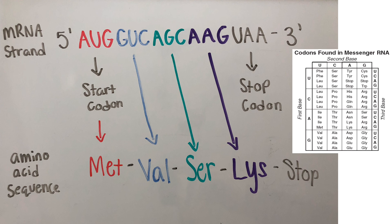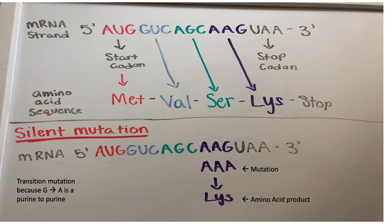Shown below are the 4 amino acids that the mRNA codes for using the chart. Finally, we are ready to describe our point mutations.